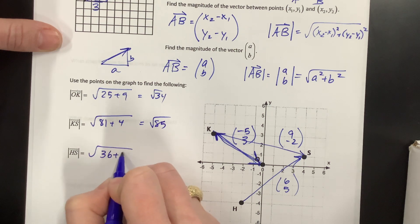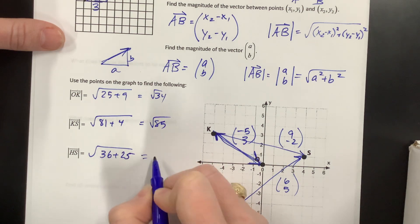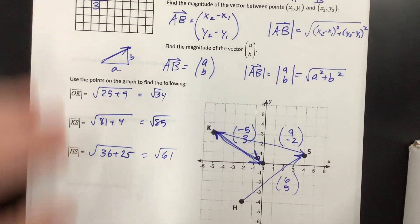HS, square root of 65, I can't talk, 36, wow. Plus 25, that's 50, so 61. Did I do that correctly? 41 plus 20 more is 61. Okay, and there's finding the magnitudes of those vectors. What's next? I'll make another video.